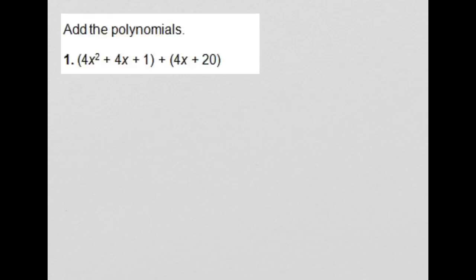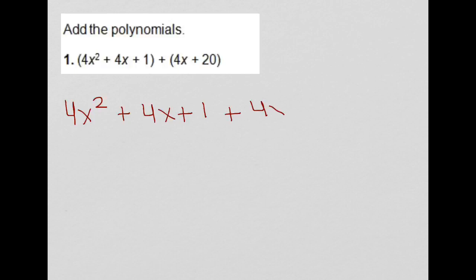In example number 1, it tells us to add the polynomials: 4x squared plus 4x plus 1, plus 4x plus 20. So first, let's just write that in normal form: 4x squared plus 4x plus 1 plus 4x and 20.